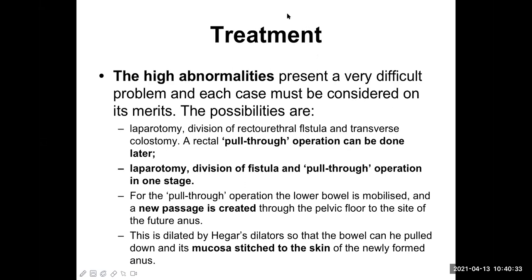High abnormality is a challenging one. It presents a very difficult problem and each case must be considered on its own merit — one case may be high anal atresia without fistula, while another may have fistula. The possibilities of treatment are laparotomy, division of recto-urethral fistula, and transverse colostomy, followed by a rectal pull-through operation done later as a second stage.